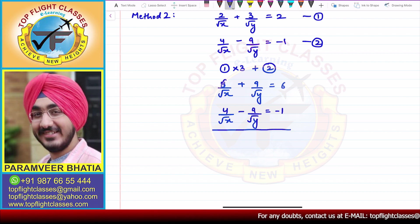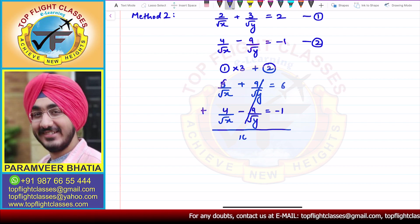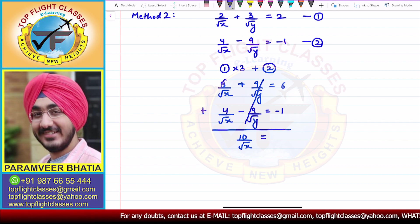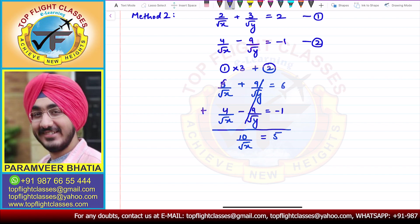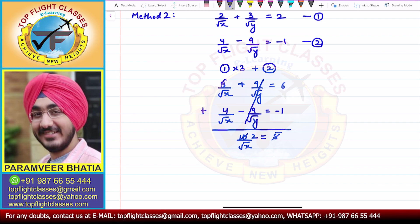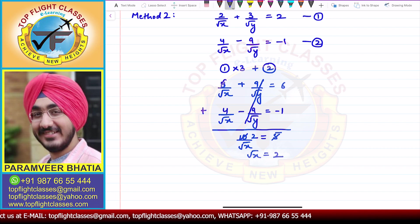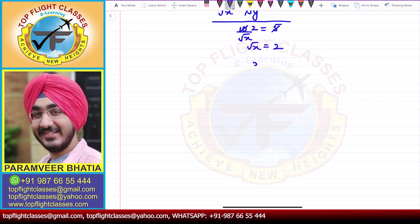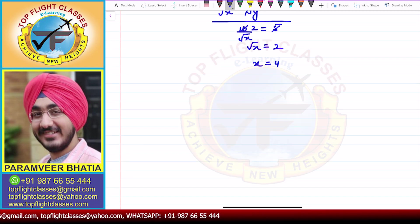Adding the two equations, the 9 by root y terms cancel. We get 10 by root x equals 6 minus 1, that is 5. So 10 and this cancels, giving root x equals 2. On squaring both sides, x equals 4.